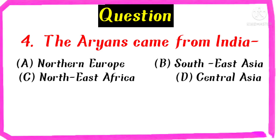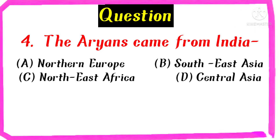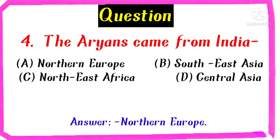The Aryans came from — India, Northern Europe, Southeast Asia, Northeast Africa, Central Asia. The right answer is Northern Europe.